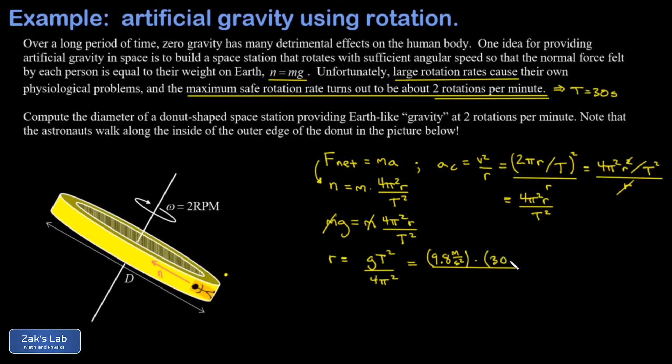We plug in our 30 seconds for the period. That's going to be squared, and then divided by 4π². Looking at the units, I have second squared from that period term, second squared in the denominator from the acceleration term, and I get meters popping out. So that's good.